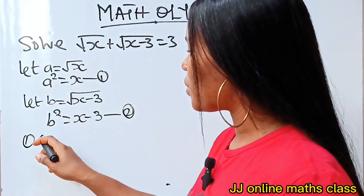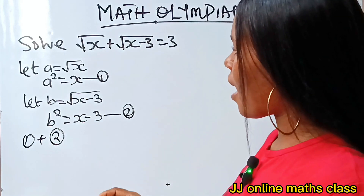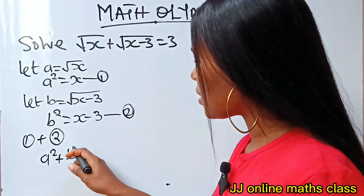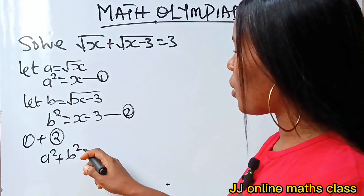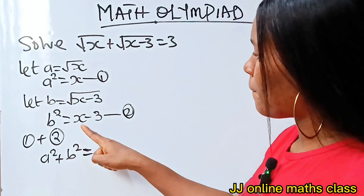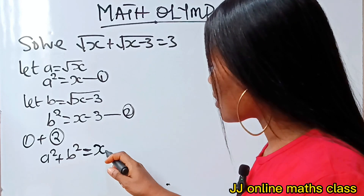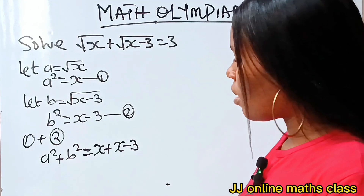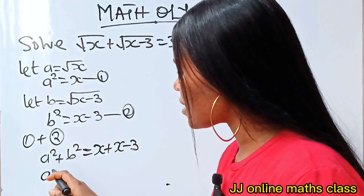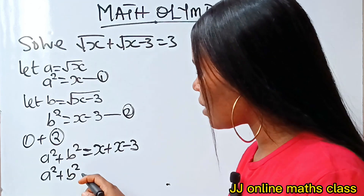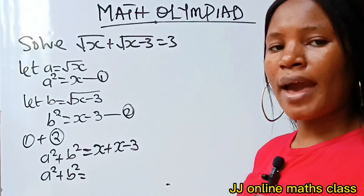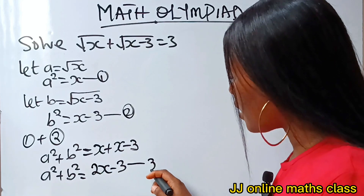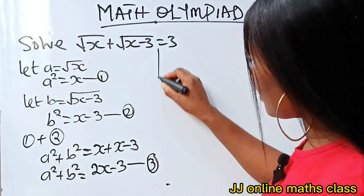Now let's add equation one to equation two. So equation one plus equation two gives us: a² + b² = x + (x − 3). Solving further, a² + b² = 2x − 3. Let's call this equation three.